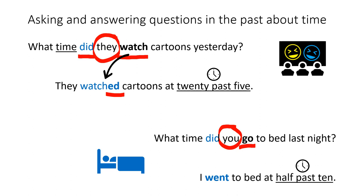Again, go in the question is not in the past, but in the answer, it has to be in the past. And it's an irregular verb, so we say, went. I went to bed at half past ten.